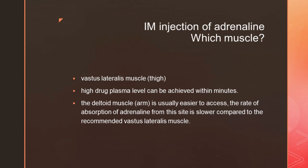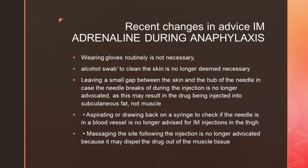For the IM injection of adrenaline in anaphylaxis, the vastus lateralis muscle of the thigh is always recommended because a high drug plasma level is achieved within minutes at this site. The deltoid muscle is not recommended because the rate of absorption of adrenaline there is very low. Even though the deltoid is easily accessible, it does not absorb adrenaline properly, so the vastus lateralis must be chosen.